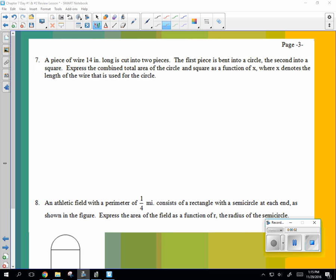This is number seven from the green packet. We're trying to minimize a, looks like an area. So a piece of wire 14 inches long is cut into two pieces. So one piece we're going to cut is X. What's the other piece going to be?